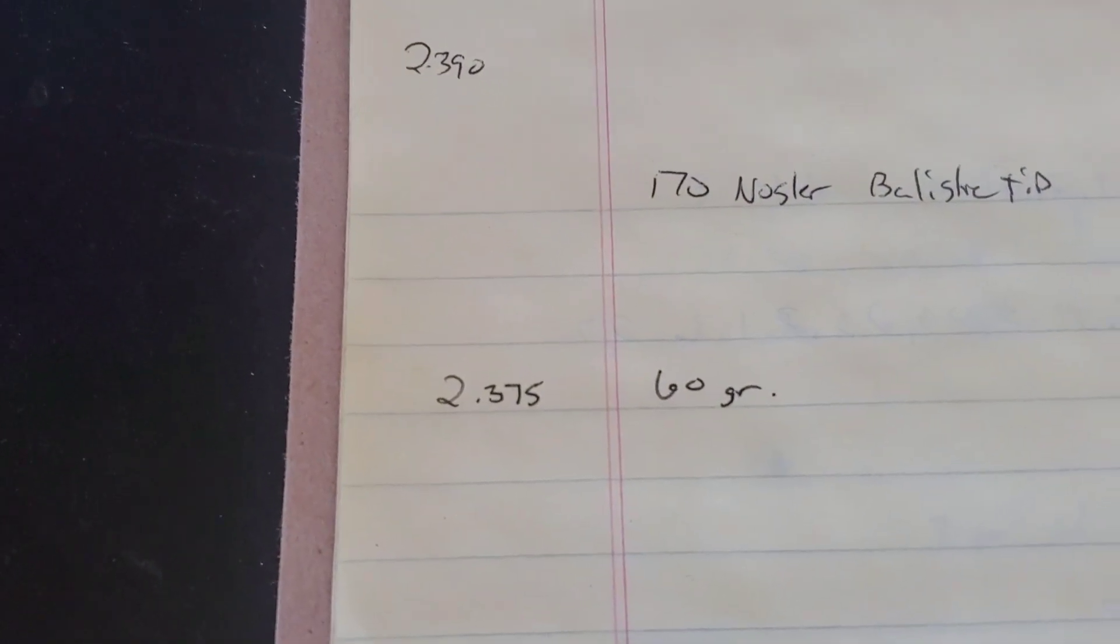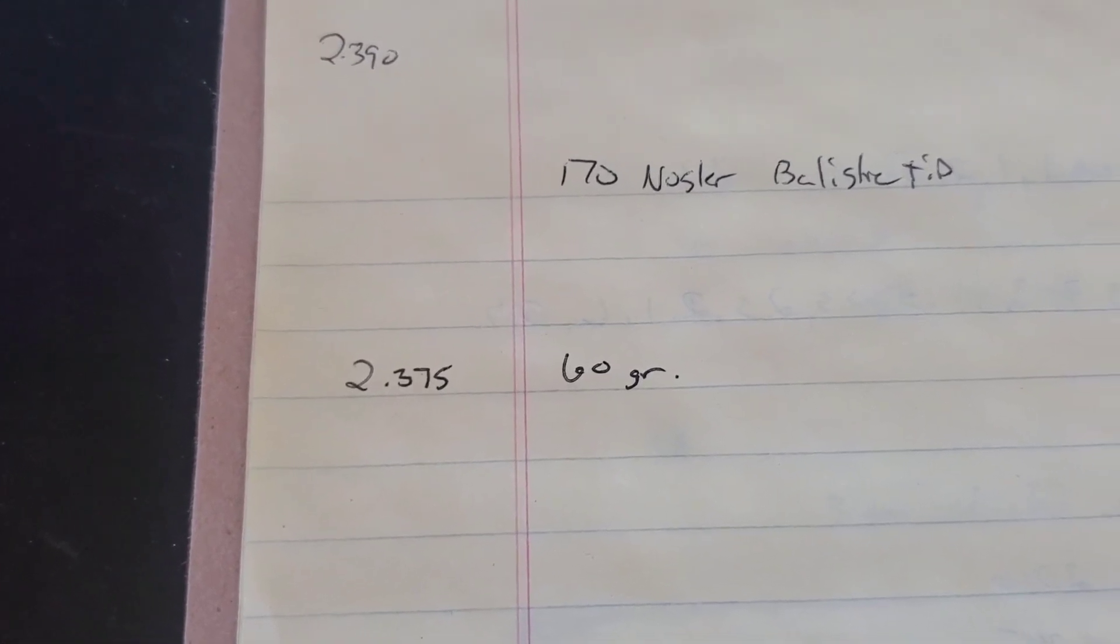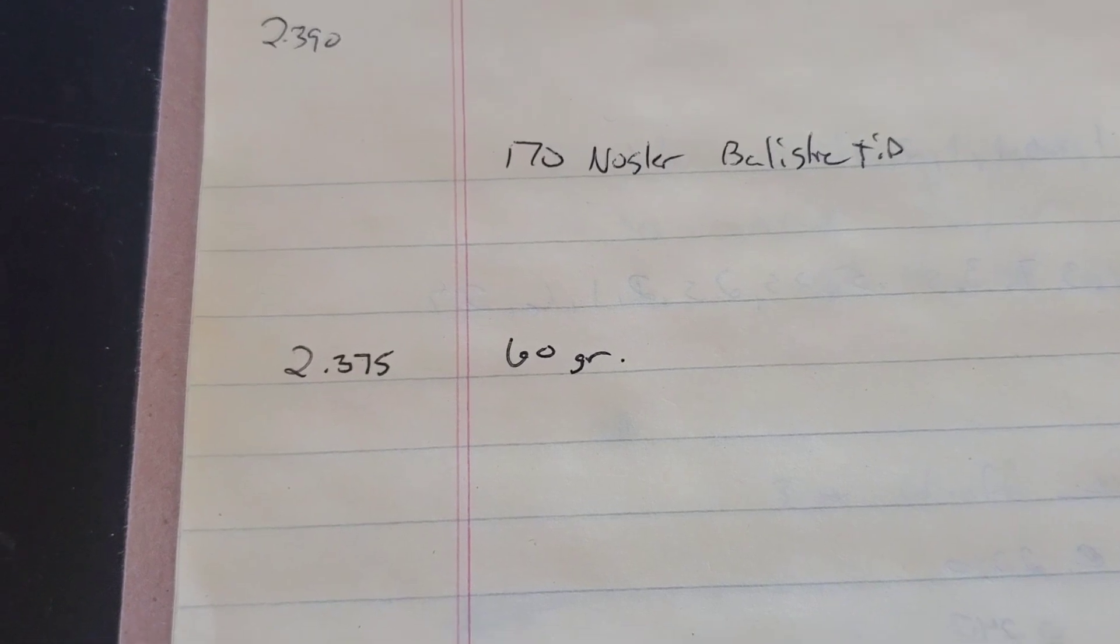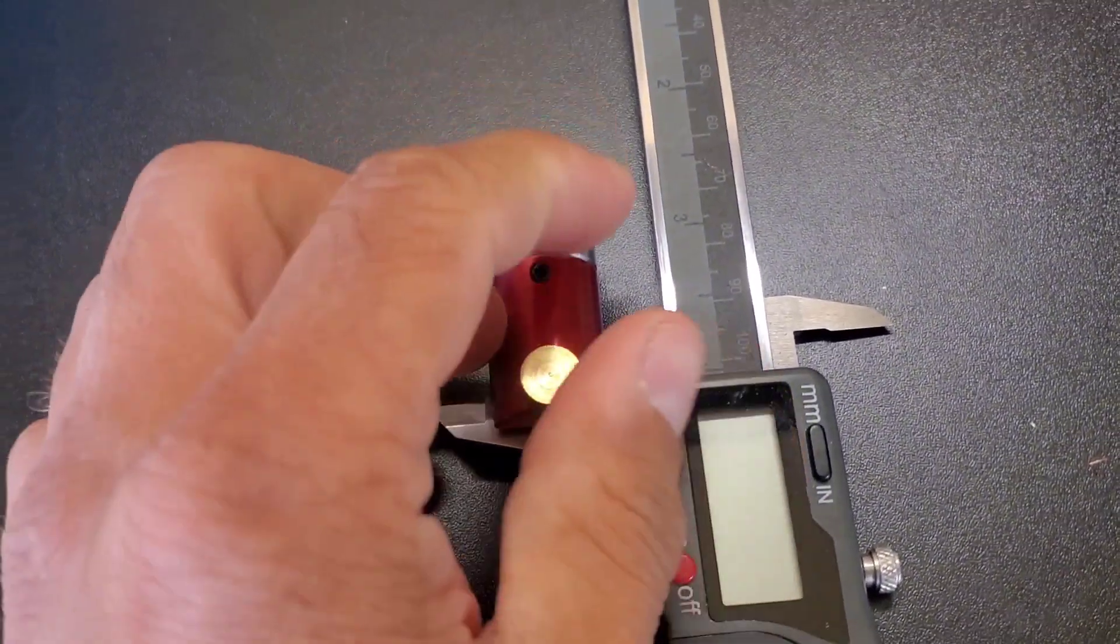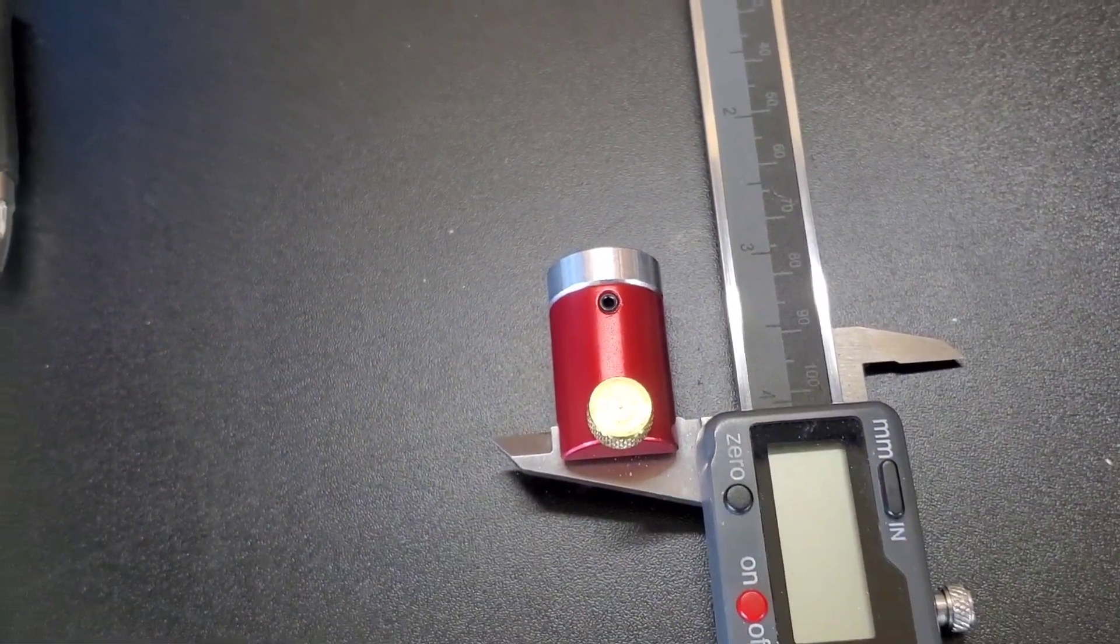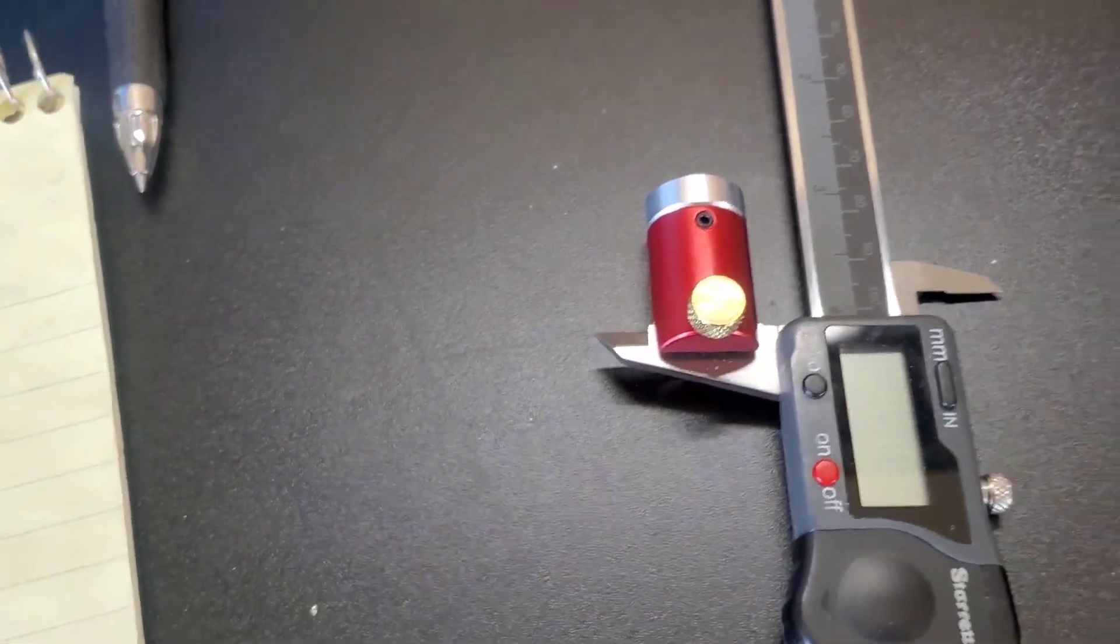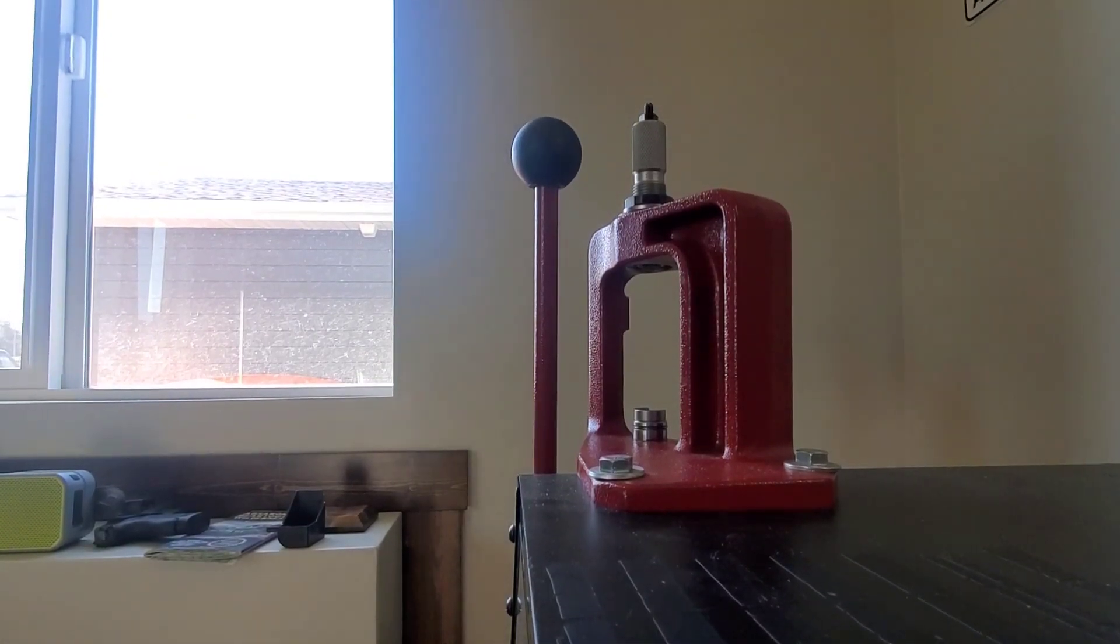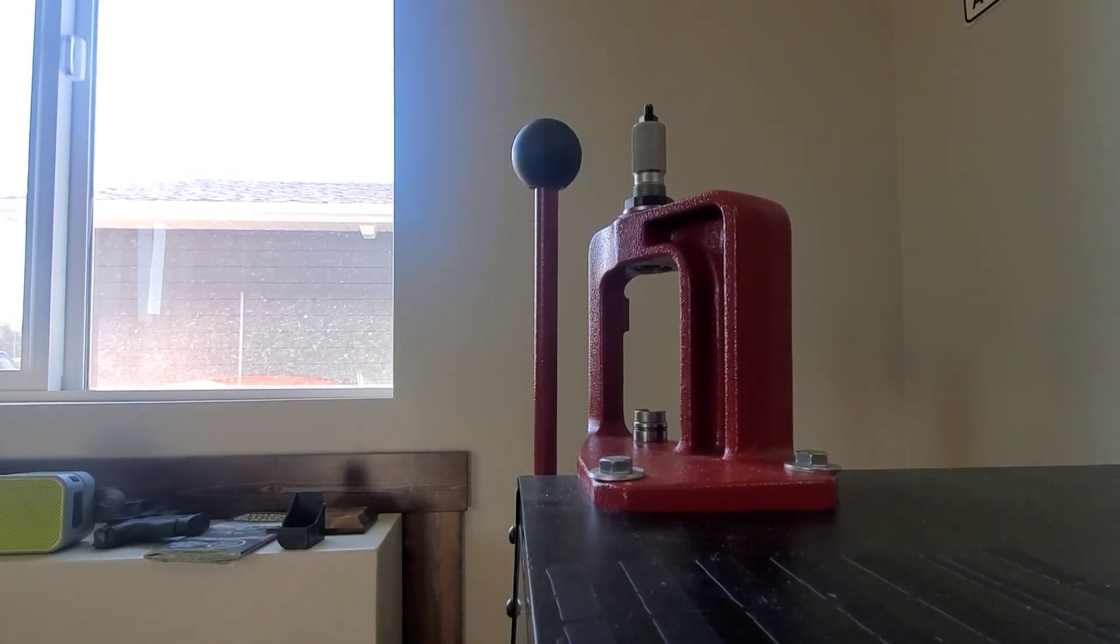So we're shooting for a seating depth of 2.375. That's going to be the base to ogive with the 60 grains of this powder, and I'll get that measurement using the comparator gauge from Hornady. Okay, take our case.